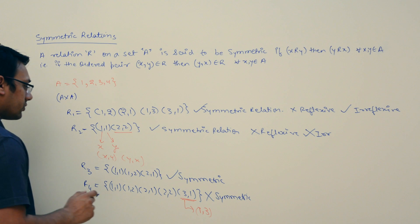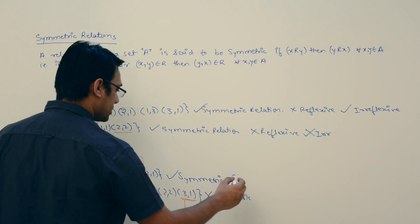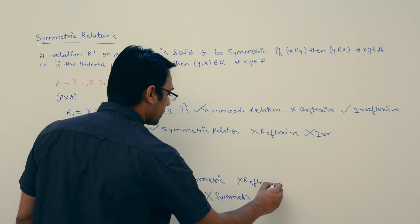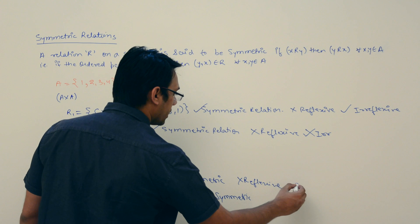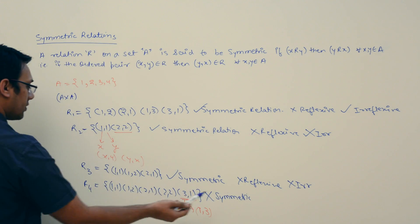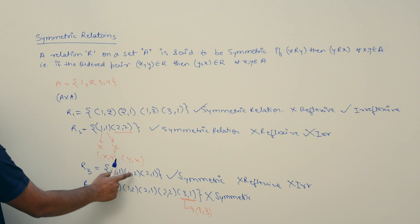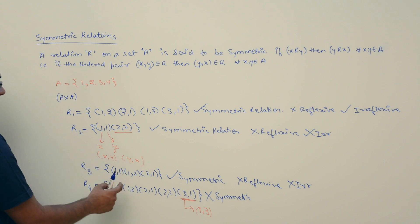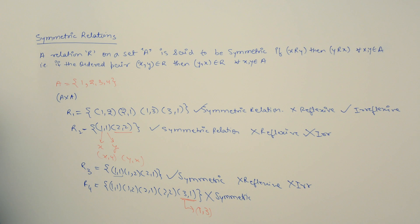If you look at R3, then R3 is not reflexive because it is not having the pairs (2,2), (3,3), and (4,4). And R3 is also not irreflexive because it is containing the pair (1,1). You can check the previous videos for what reflexive and irreflexive relations are.